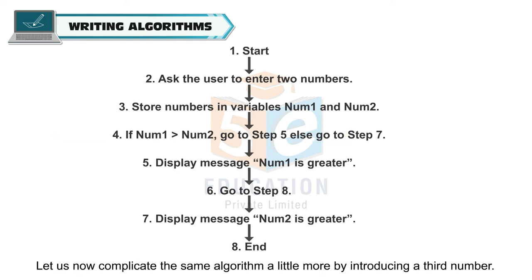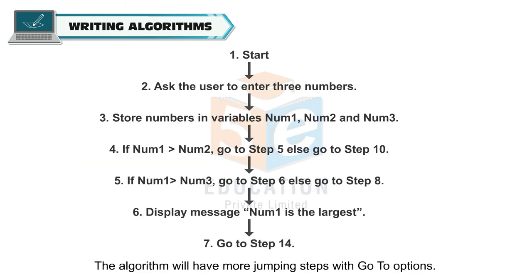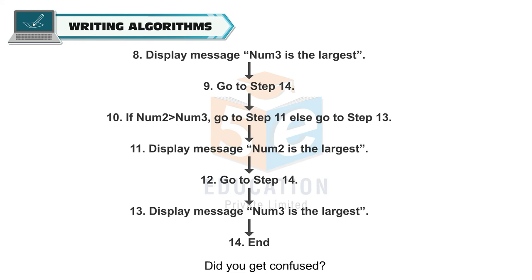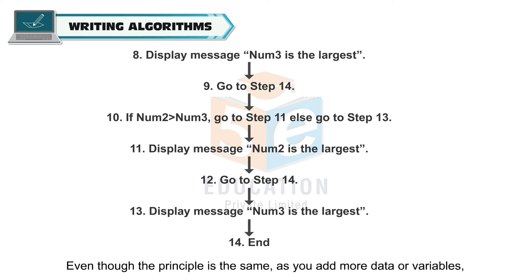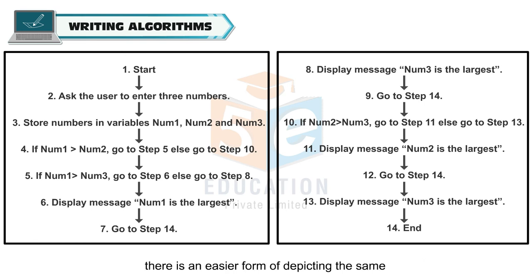Let us now complicate the same algorithm a little more by introducing a third number. Algorithm 4: write an algorithm to ask the user for three numbers and then tell which the largest number is. The algorithm will have more jumping steps with go-to options. Even though the principle is the same, as you add more data or variables, the algorithm steps increase and seem more confusing. To overcome this confusion and make it easier to understand the steps, there is an easier form of depicting the same step-by-step procedure graphically — in the form of flowcharts.